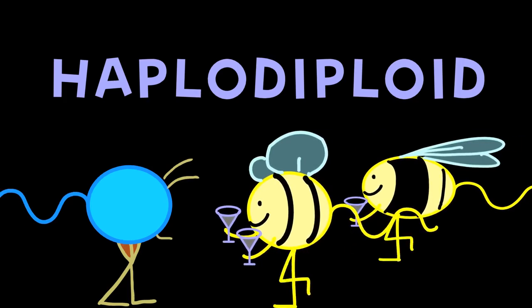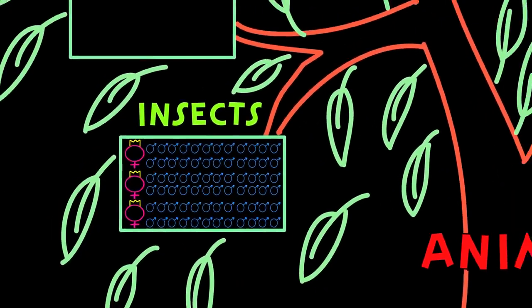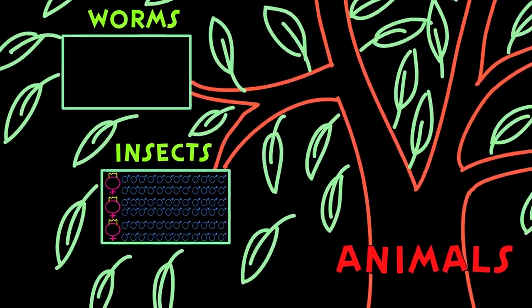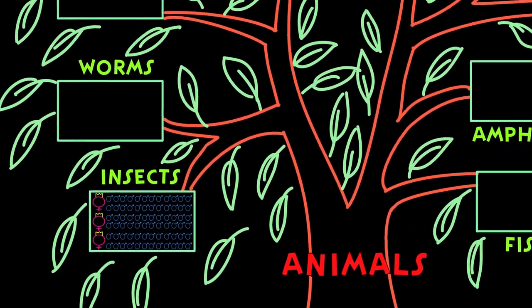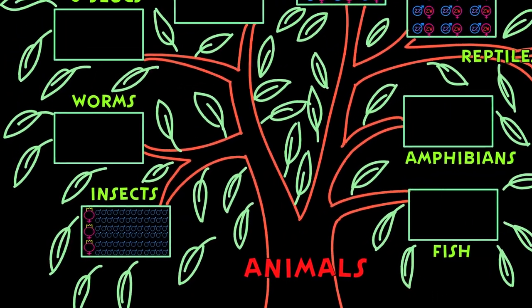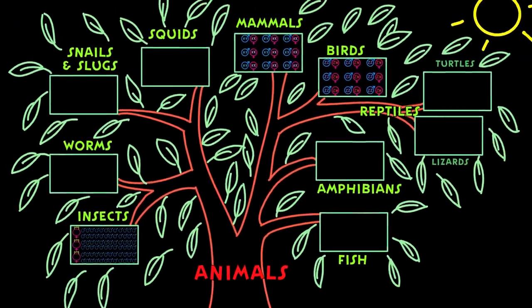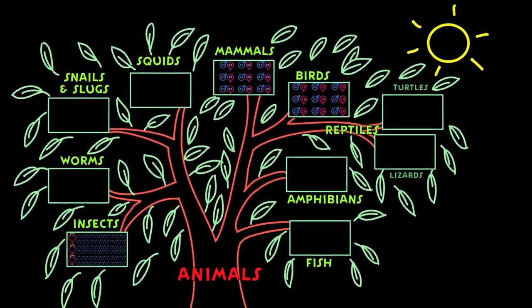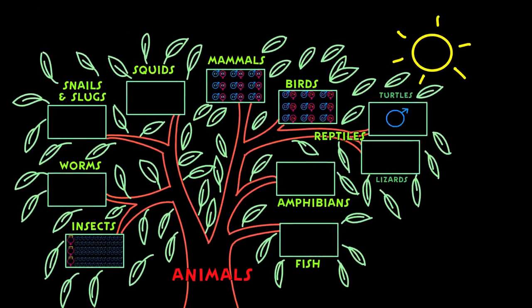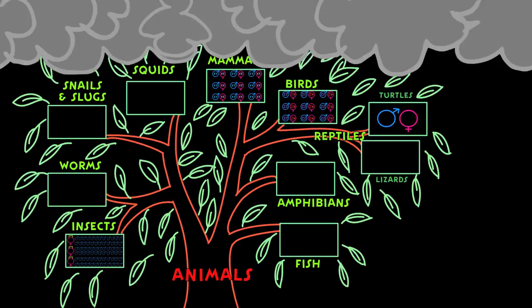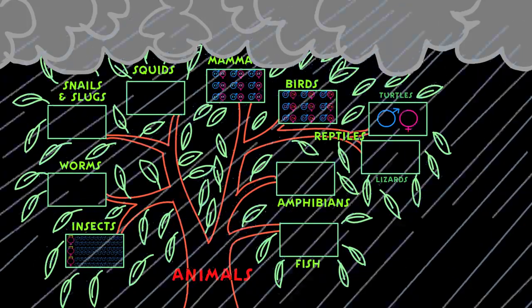Since our own sex is determined by genes and we do know of these other animals that have their sex determined by genes, it's easy to assume that for all animals the sex of their babies still must be determined by genetics. However, for some animals, the question of whether it will be a boy or a girl has nothing to do with genes at all and can depend on something like the weather.